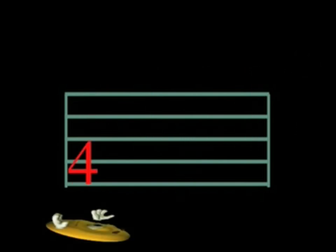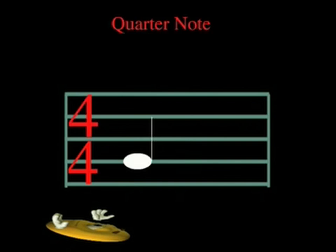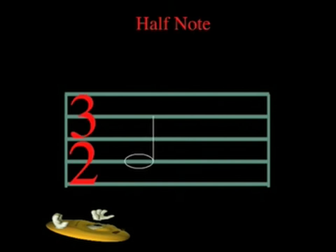Now the bottom number tells us which note value becomes the beat. For example, in 4 4, the quarter note becomes a beat. Or in 3 2, the half note becomes the beat, and so on.